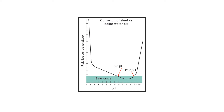Boiler water pH. Maintaining an acceptable boiler water pH is very important. Boiler water with a low pH is acidic and can be corrosive to metal exposed to the acidic water. Continuous operation of a boiler with acidic water will result in a loss of the passivating magnetite layer, which is unstable in acidic or slightly basic conditions. This loss can result in generalized corrosion of the metal throughout the boiler or more localized corrosion in specific areas.